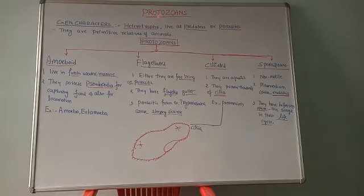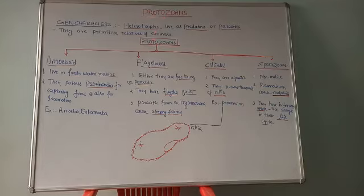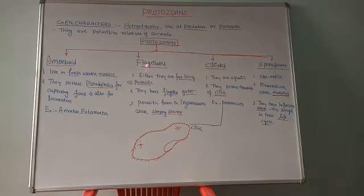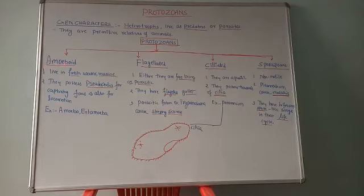Protozoans are primitive relatives of animals — 'proto' means primitive, 'zoa' means animals. Protozoans are broadly classified into four groups based on the presence or absence of locomotory organs. The four categories are: number one, amoeboid; number two, flagellated; number three, ciliated; and number four, sporozoans.